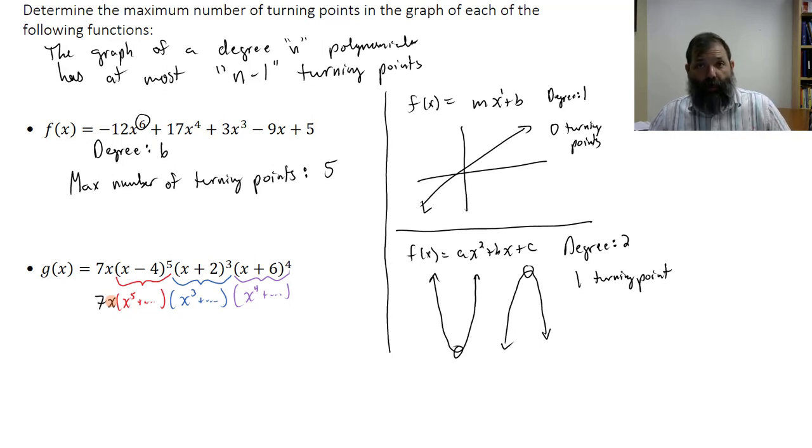Now, again, if we were to go through all the multiplication, all the distributive properties, it would be a real mess. This is not a simple process. But if I were to multiply this all out, I would have a 7x times an x^5,